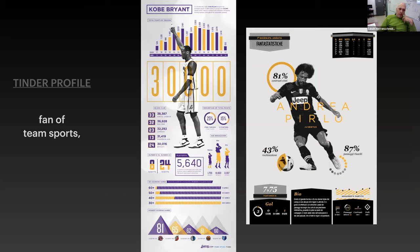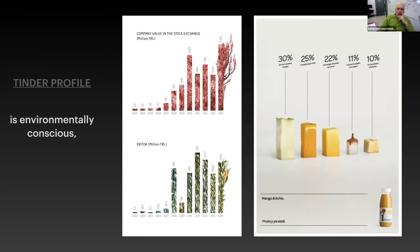Fan of team sports — there's Kobe Bryant's life in numbers, hitting 30,000 points. On the right-hand side is another really cool little graphic. You can bring illustrations, as well as photographs, silhouettes and graphics and representations of a lot of data in a very cool way. This one is very long and tall, and is environmentally conscious.